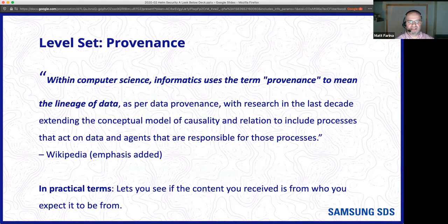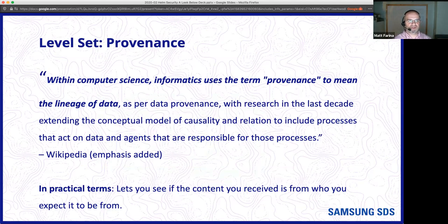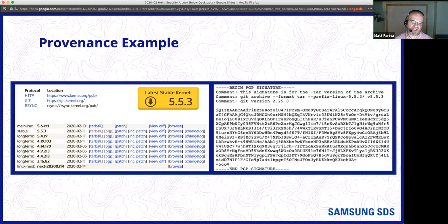One of the most well-known forms of going beyond hashes is what's called provenance. The whole idea is being able to track the lineage of what you got — where did it come from, did it come from who you said it would be? This is different from a hash or digest, because it doesn't just tell you if the content is what you expected — it tells you whether it came from who you expected. Here's a provenance example: if you go to get the Linux kernel, you'll see a tarball and a PGP signature. That PGP signature is signed by one of the Linux maintainers, and you can get their public key and verify the signature.